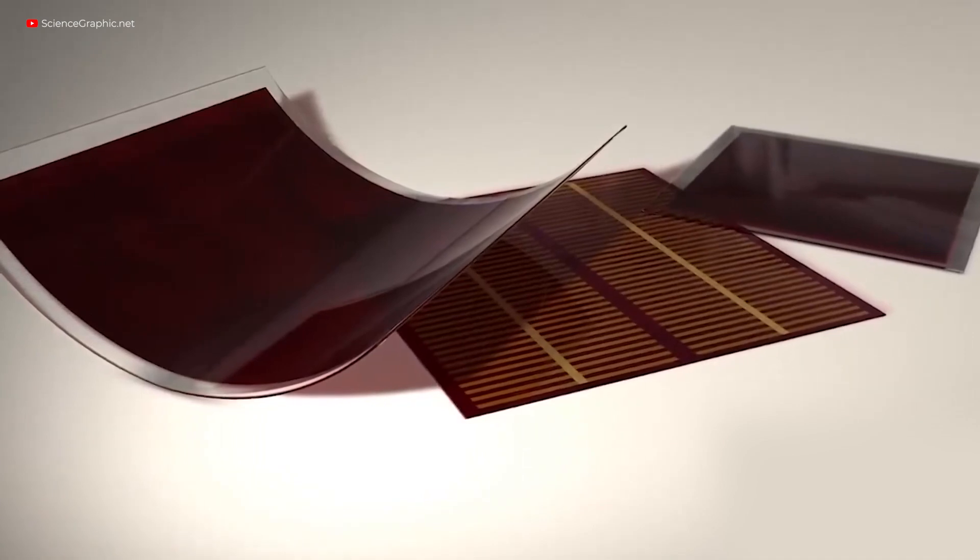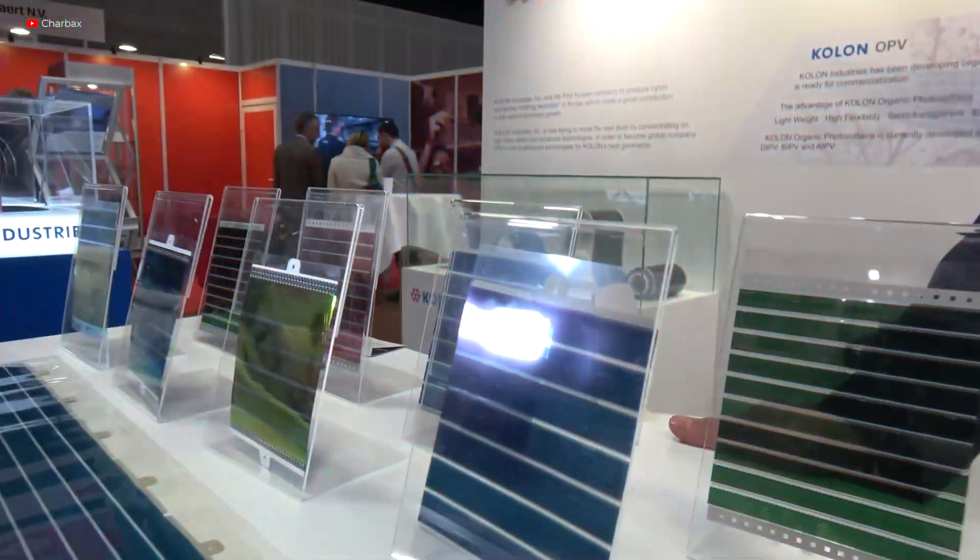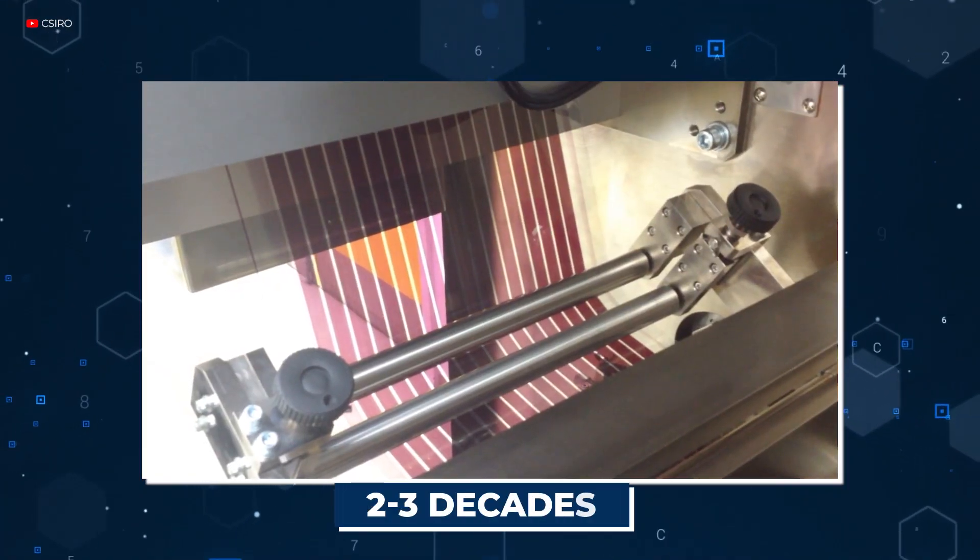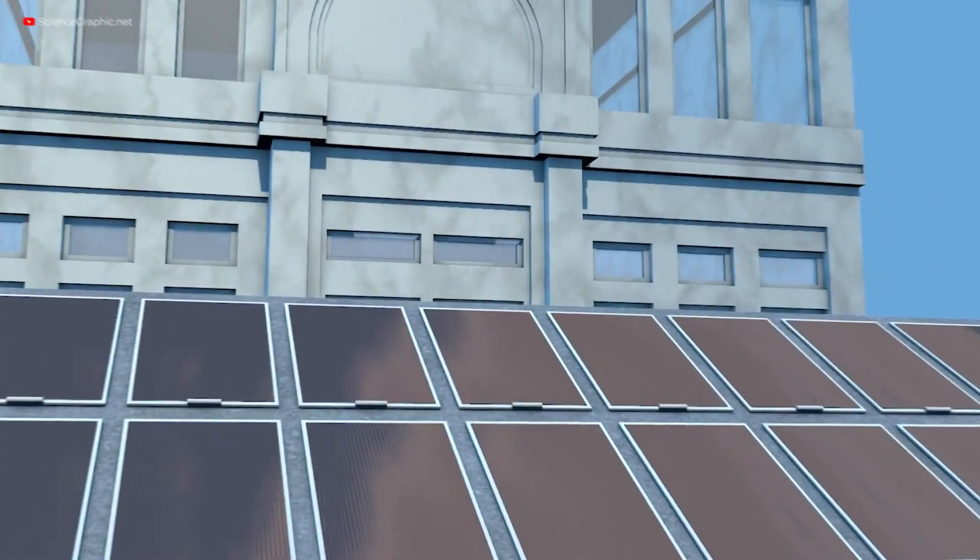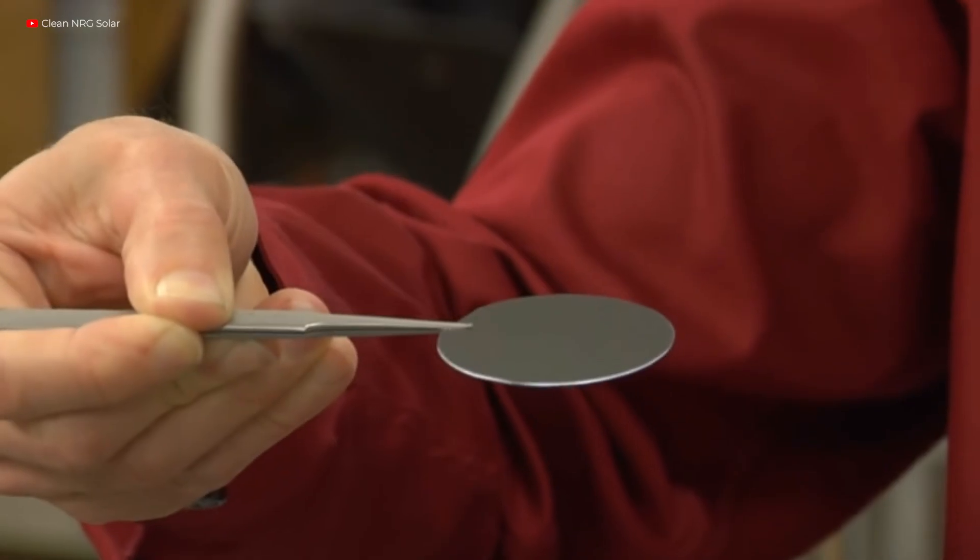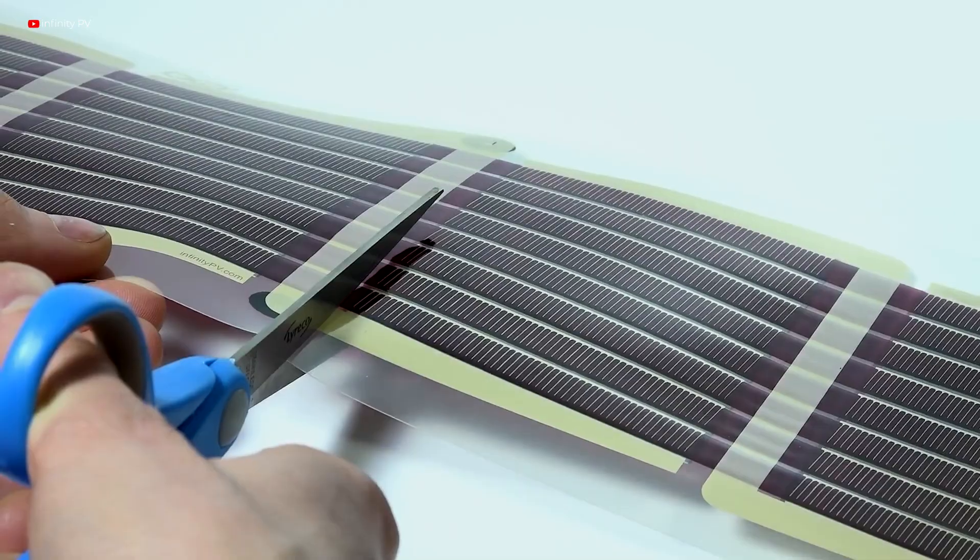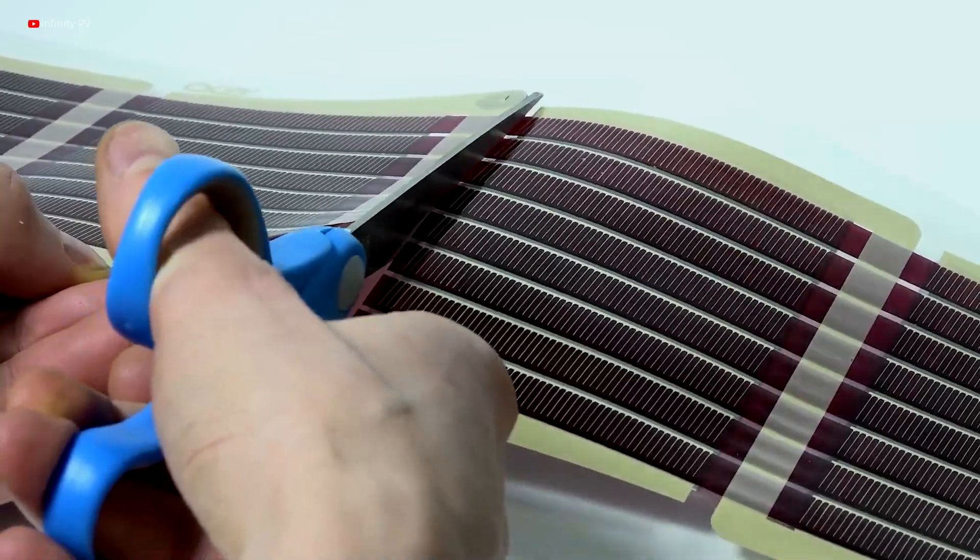Perovskite can't be available in the markets unless scientists find a way to make it stable, and not just for a few years. The mineral has to have stability for at least two to three decades before researchers can finally put down their thinking hat and use perovskite as an alternative energy source. Don't be disheartened though. Scientists all over the world are trying their best to find a hack for this problem. There are numerous ongoing researches to help improve perovskite stability and make it available for commercial use.